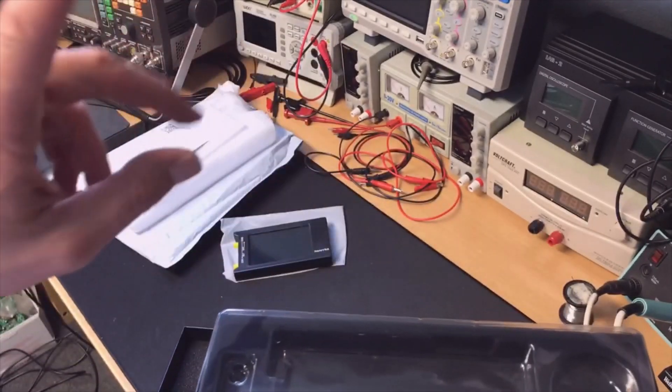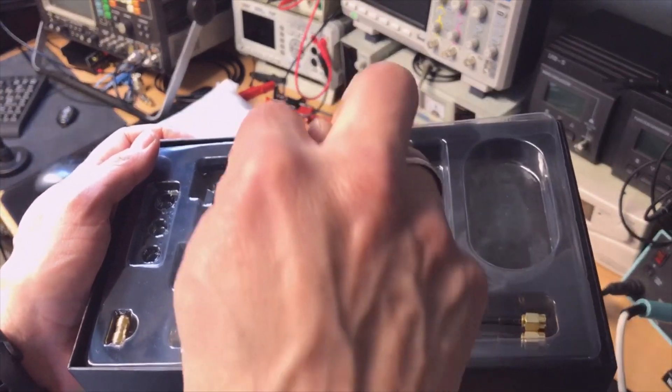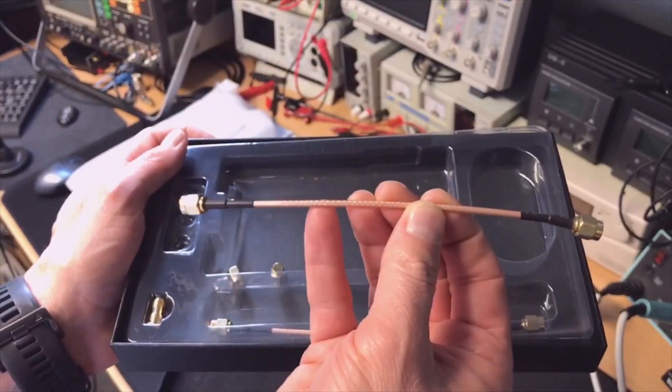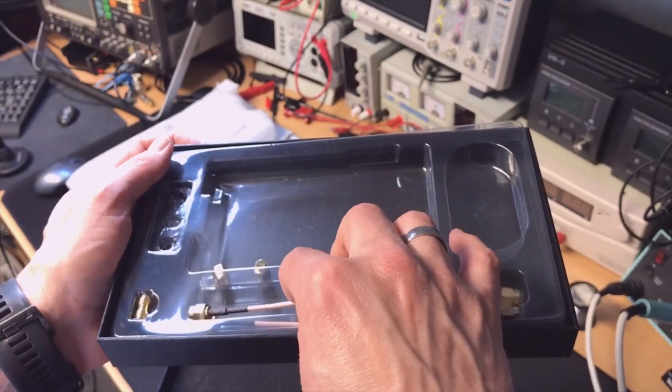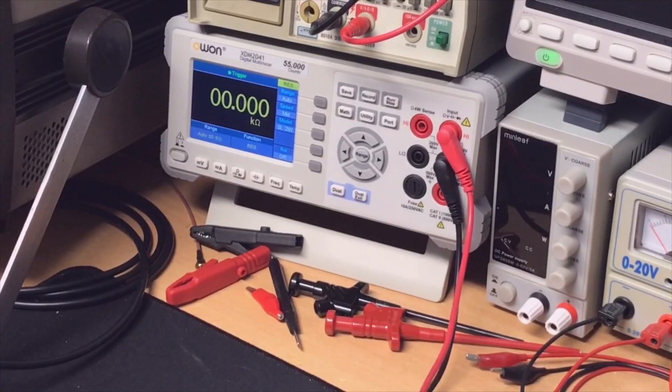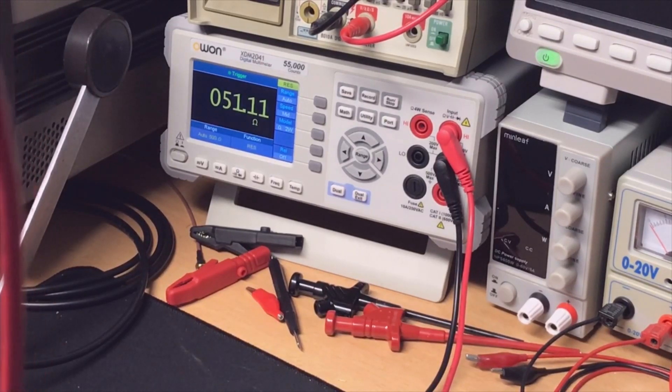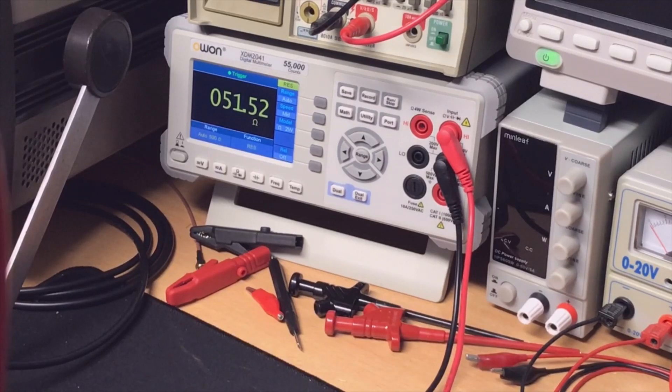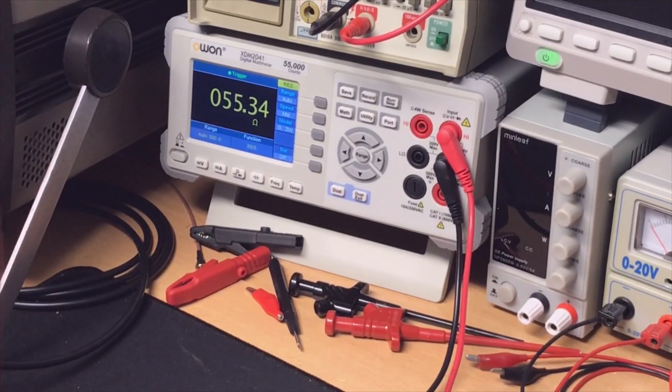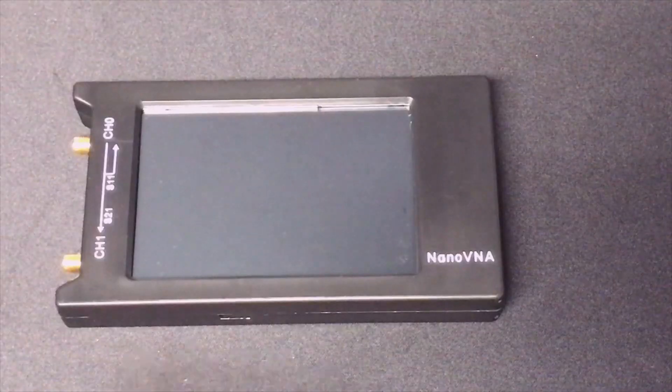To calibrate, we probably need to go through a test procedure with the short, with the open, with the 50 ohms, and with 100% feedback. Let's measure the dummy load - 51 ohms. Okay, that is more or less our 50 ohms. The short and the open are self-explanatory.